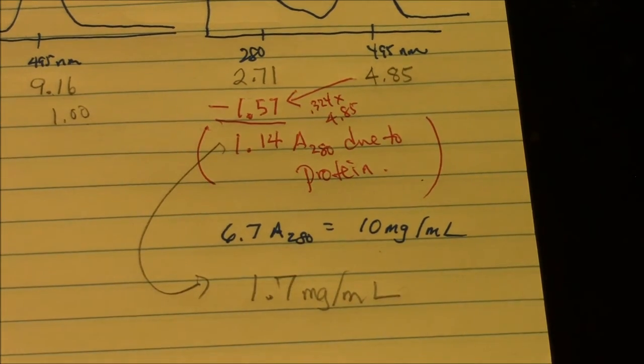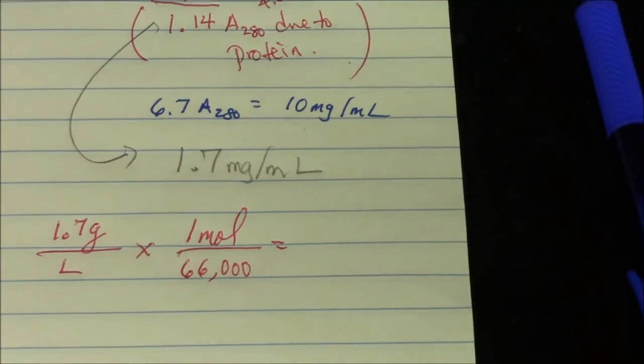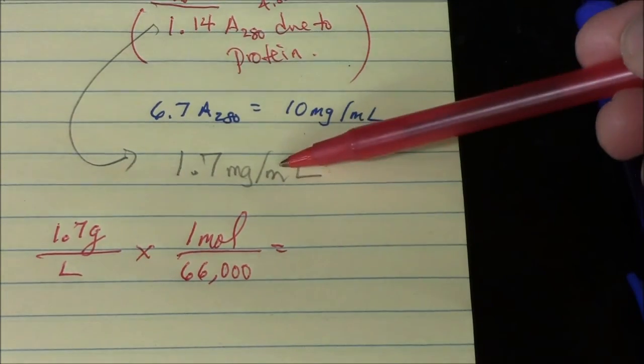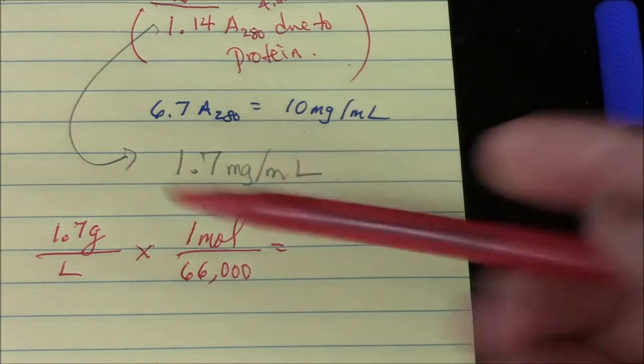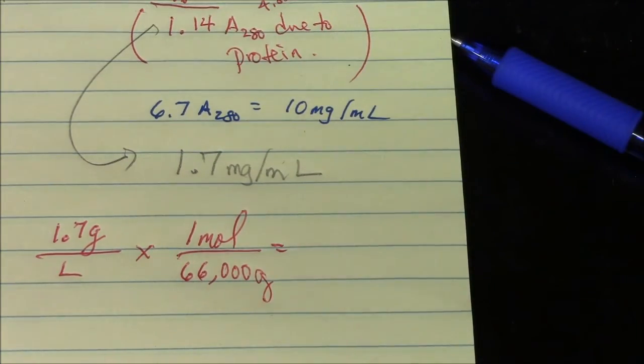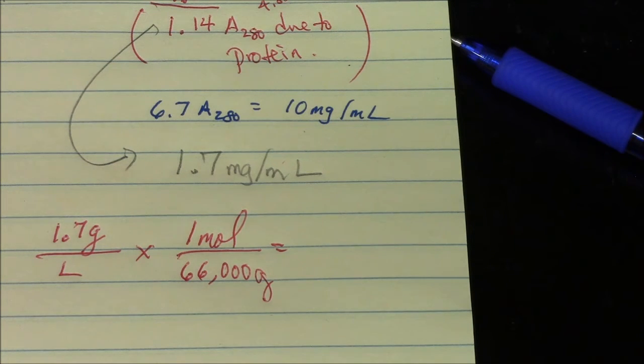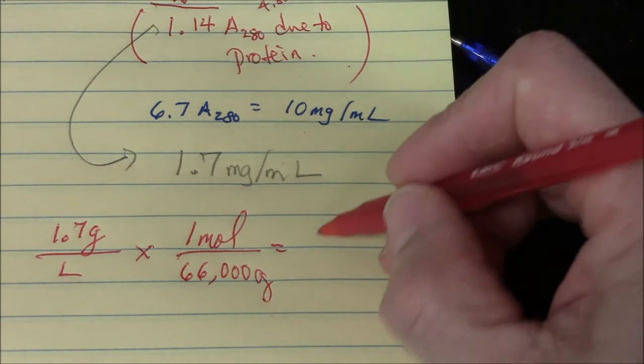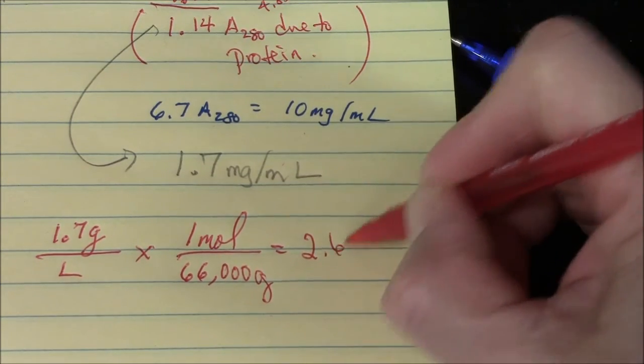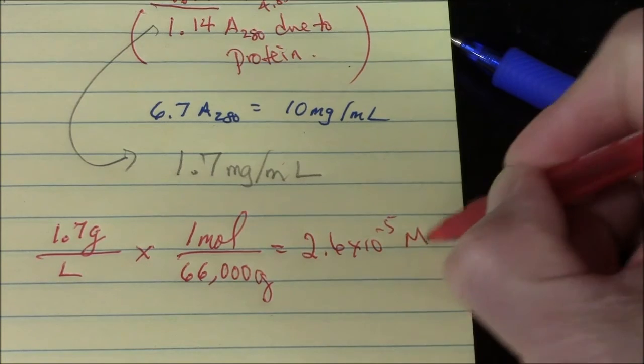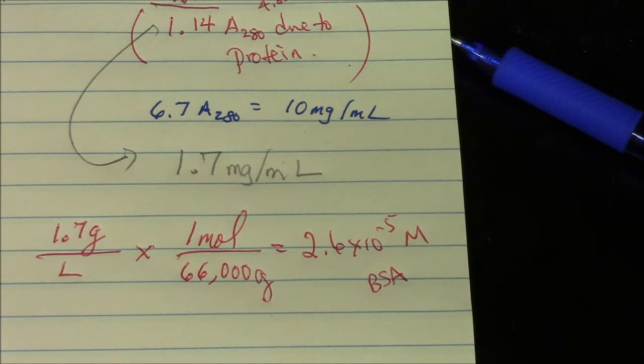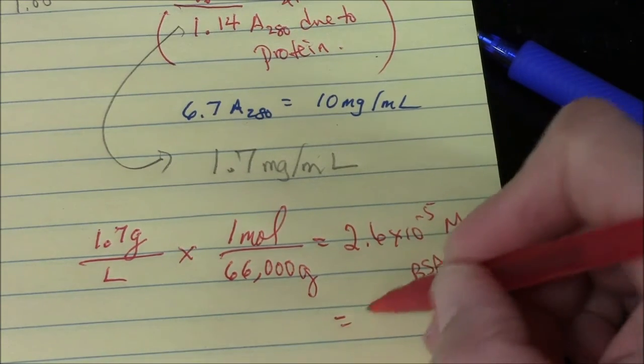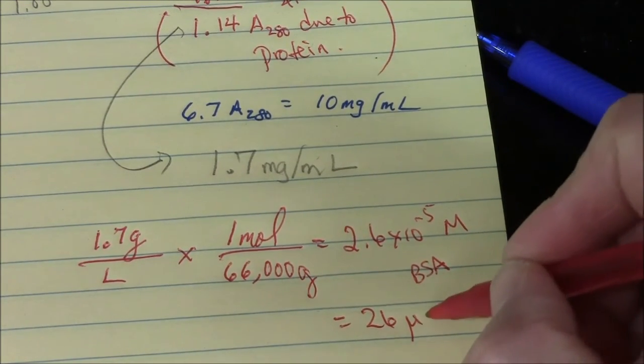That's the protein concentration in terms of mass. 1.7 mg per mil is equivalent to 1.7 grams per liter. Molar mass of BSA is about 66,000 grams per mole. So the division will get me the molarity. 26 micromolar, 2.6 times 10 to the minus 5 molar BSA. In that solution, that's equivalent to 26 micromolar.